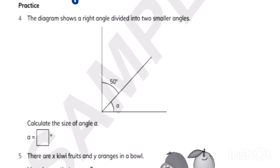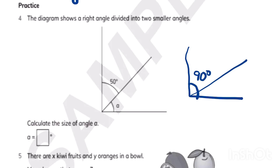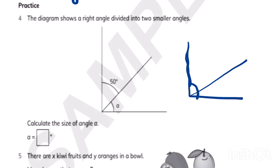In the next question, we have a right angle. A right angle is always 90 degrees. If you divide a right angle into multiple angles, the sum should equal 90 degrees. Here a right angle is divided into two angles — if one is 50, the other must be 40 to make 90 degrees. So the value of A is 40 degrees.